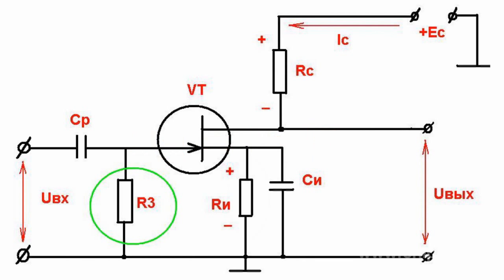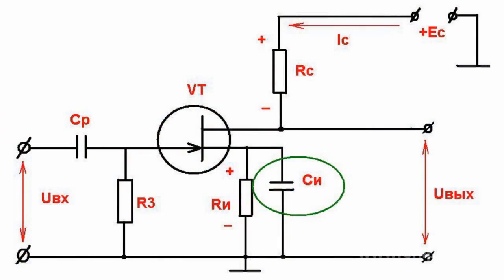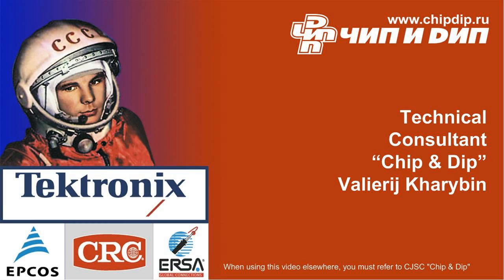Apart from automatic functions of bias to the gate, the resistor in the source circuit serves for thermal stabilization of the DC amplifier's operating mode. It stabilizes the transistor drain current. For the variable components of the voltage not to be extracted at the resistor of the source, the latter is shunted with a capacitor. This ensures stability of the stage's gain constant.